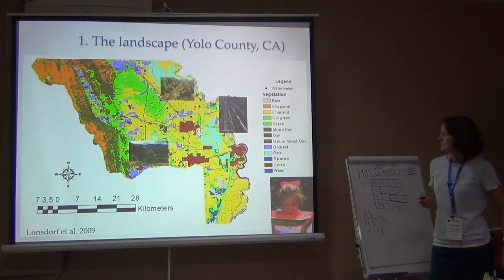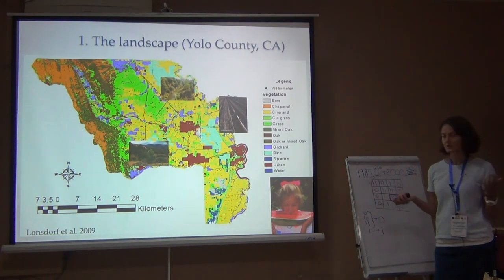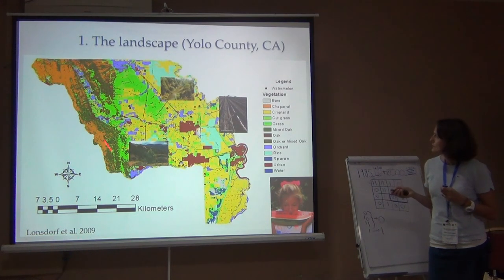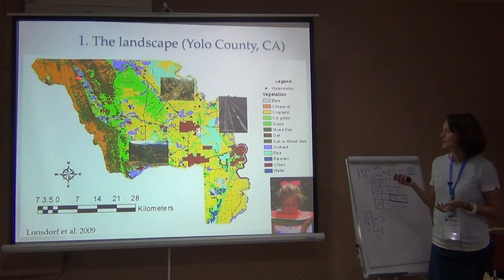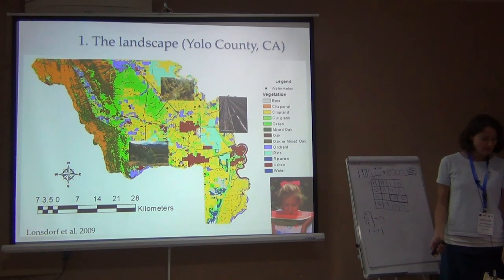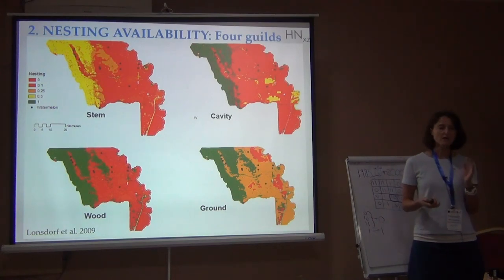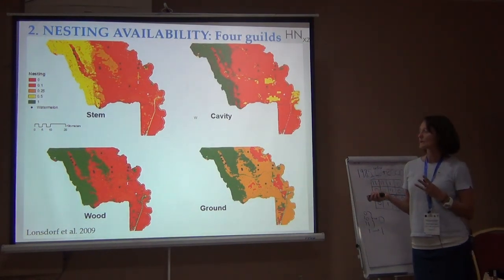Let me run through two examples to make this more concrete. This is Yolo County, California — one of the counties in the U.S. that produces many watermelons. It's a highly agricultural landscape: yellow is cropland, there's some grassland, and on the west you have oak and remnant natural land covers — more natural on one side, more crops on the other. What you do is rank from zero to one the suitability of each land cover type to provide nesting.